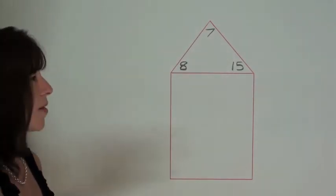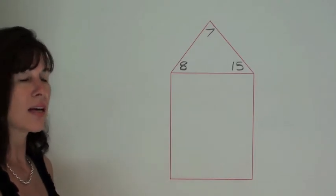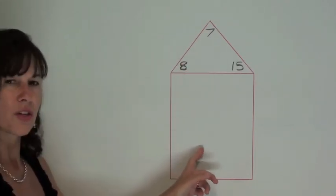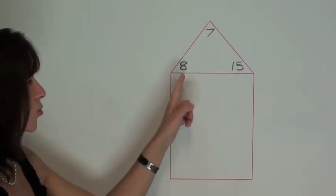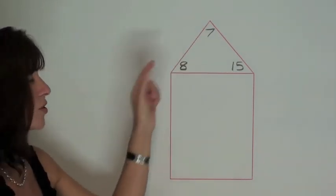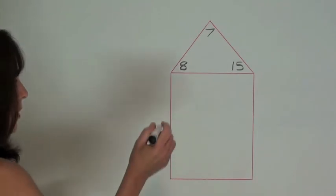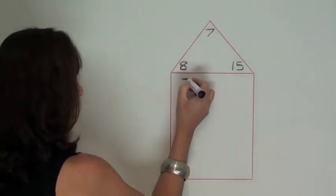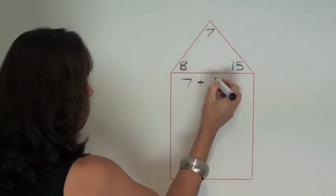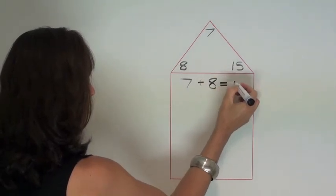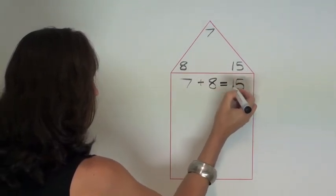Now, using this method, the children can see that we can actually have four number facts using these three numbers and that they all relate to each other. Simply by adding up two smaller numbers to make the larger number of 15.